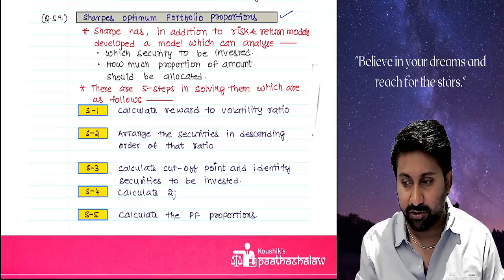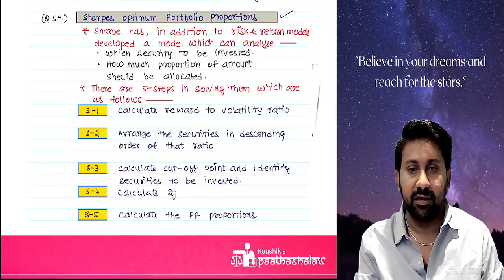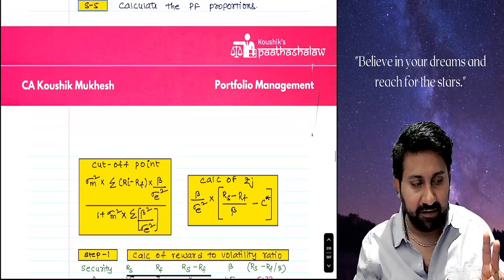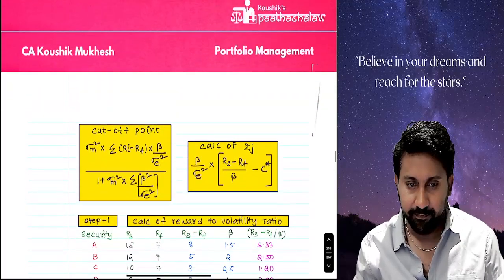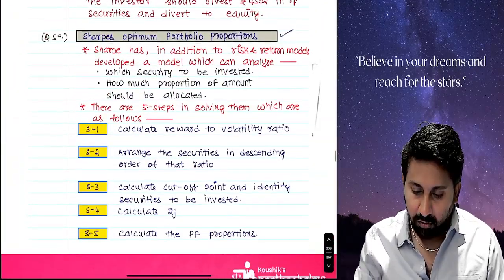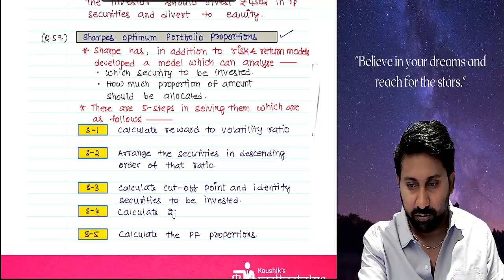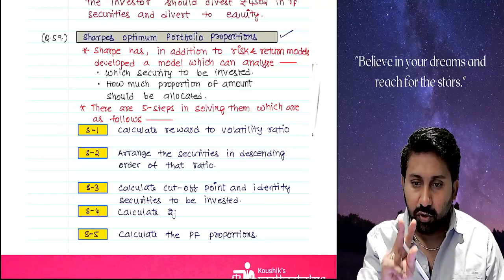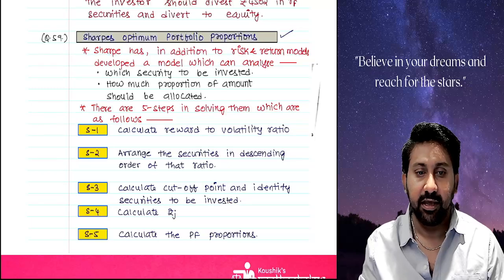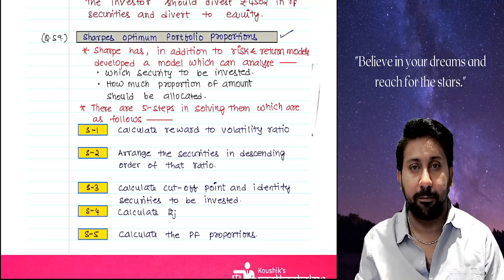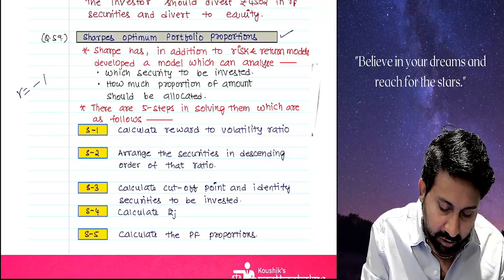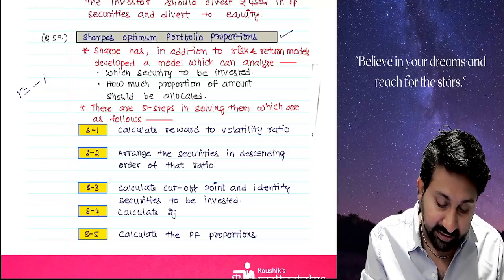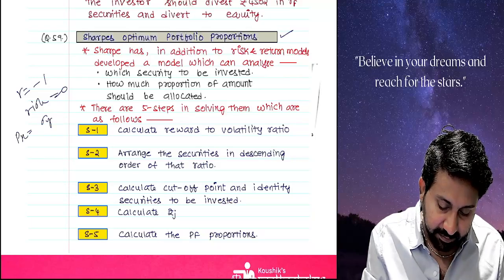If the Sharp's Optimum Portfolio Proportion question came in exam, they will give you multiple securities with their RF and returns given — RF will be the same. You should understand that we need to select two securities out of a group of securities. If you remember from revision, I told you: if r equals minus one, by injecting two securities into the portfolio in particular proportions, you can reduce the risk to zero level.